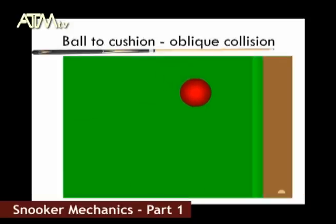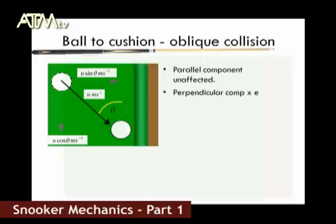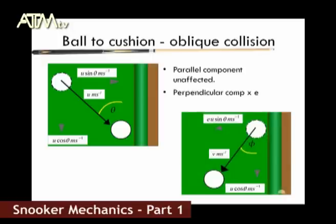But what about a collision which is at an angle to the cushion? The ball velocity can be separated into components. The U sin θ component is perpendicular to the cushion, and the U cos θ component is parallel to the cushion. In this case, only the perpendicular component is affected by our E value. So upon rebounding, the ball will have EU sin θ away from the cushion, but still retain its existing U cos θ component as it is parallel to the cushion.